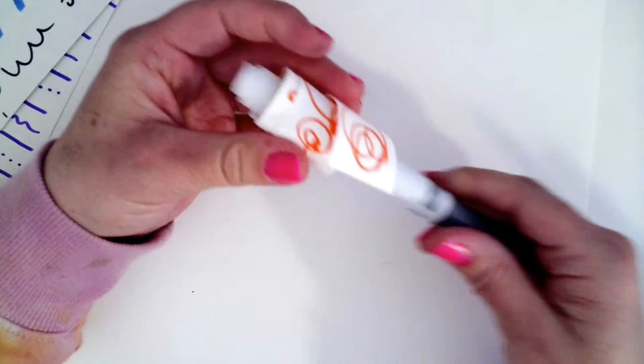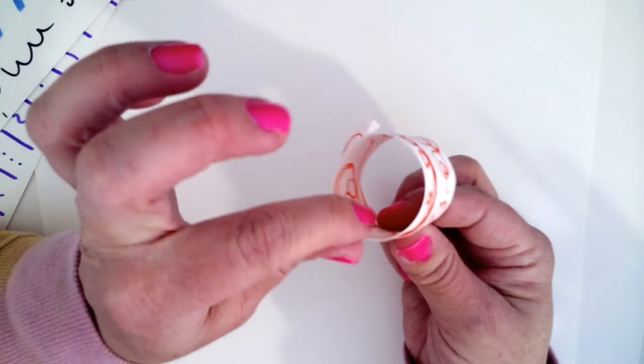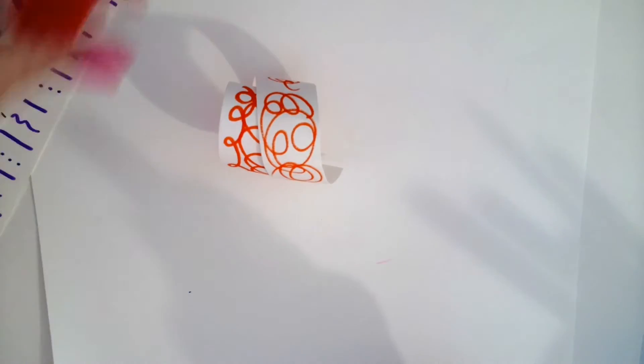You're going to hold it for a second. When you let go, it turns into a three-dimensional form. And now I can take that and I'm going to glue the edges to my paper.